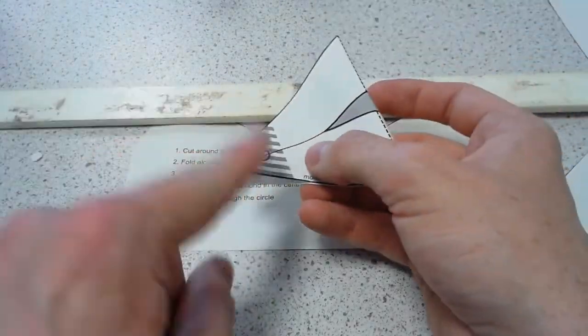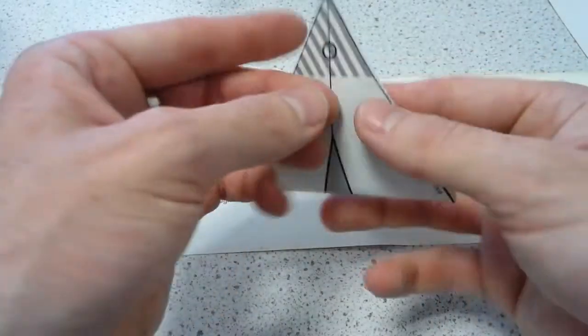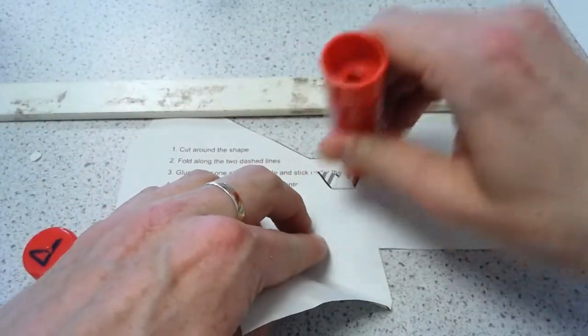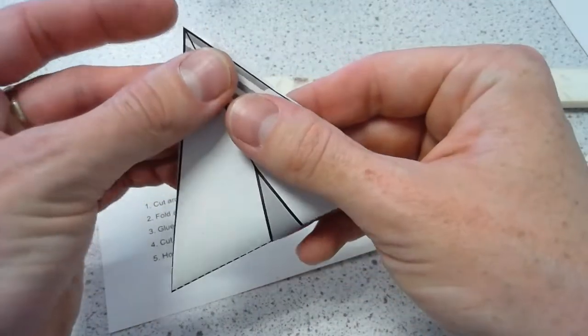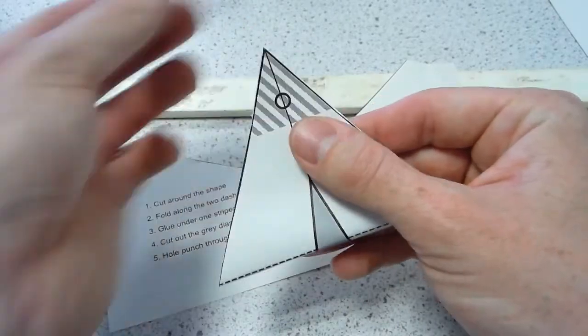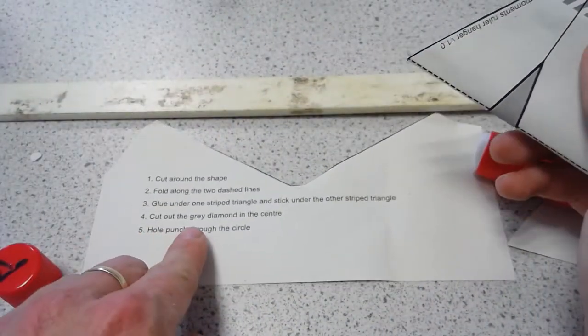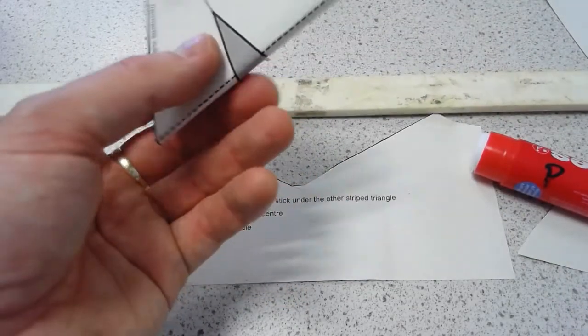You're then going to glue under one striped triangle and stick it under the other striped triangle here. Try to make sure they line up quite neatly like that. We're going to cut out the gray diamond in the center, which has now become a triangle.